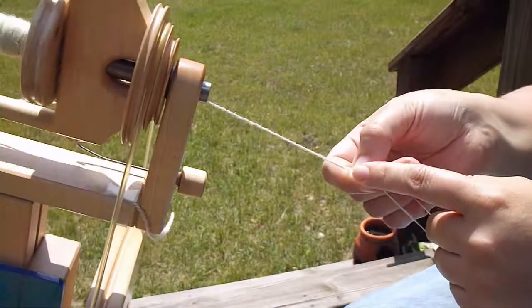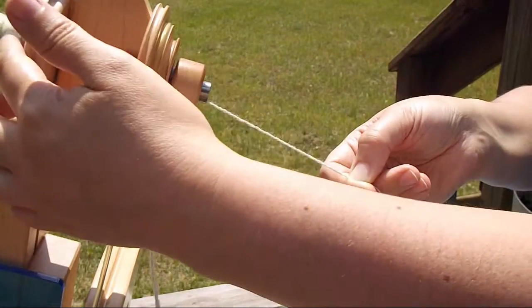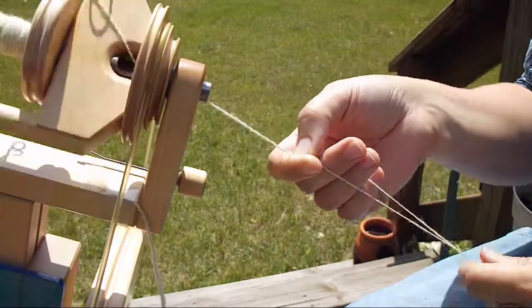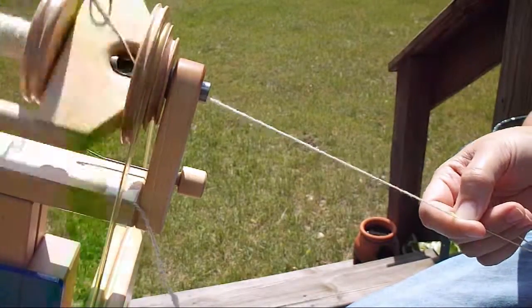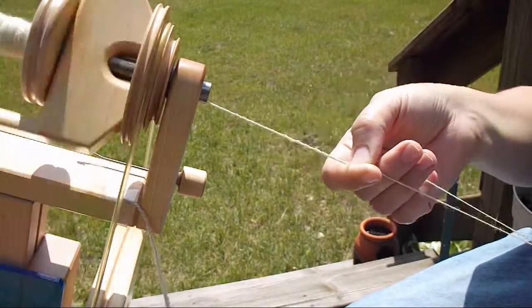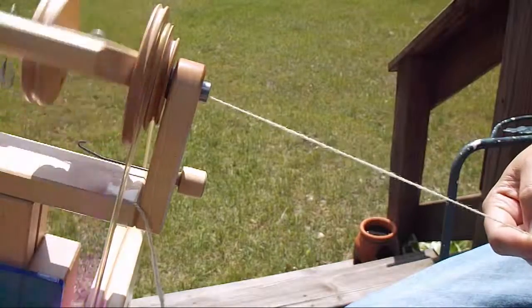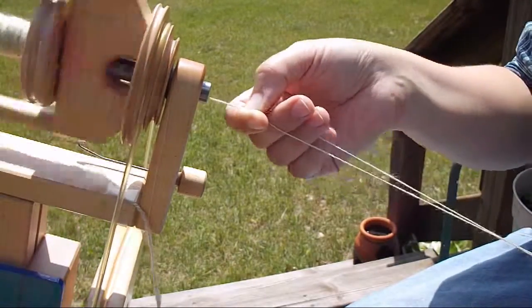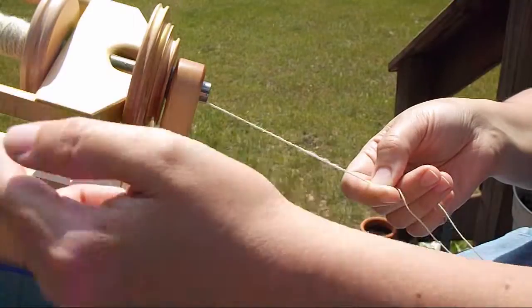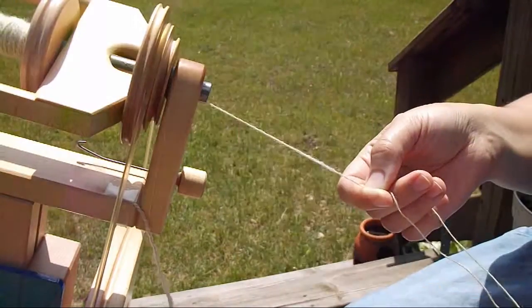Because from this point on my hand until it's actually wound onto the bobbin, the twist is continuously affected by the wheel turning. Until it is wound onto the bobbin, even from the orifice to the hook to where it touches the bobbin...